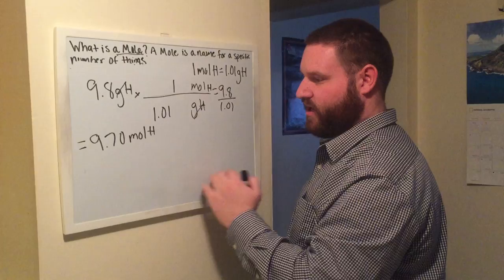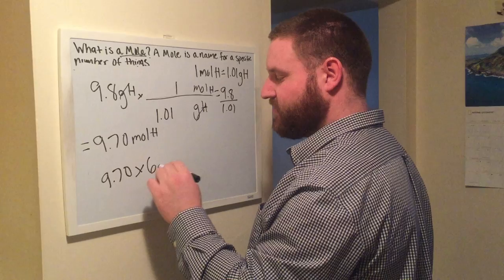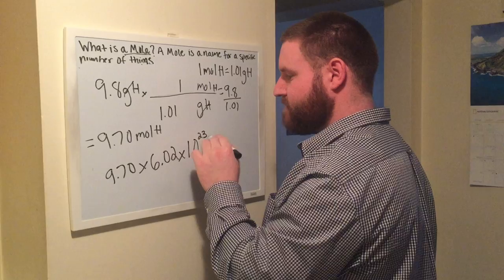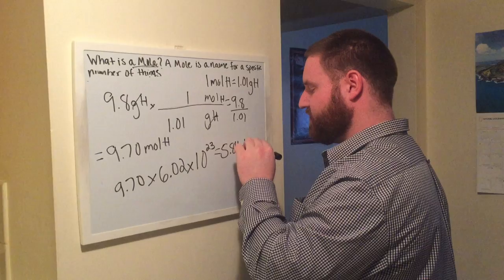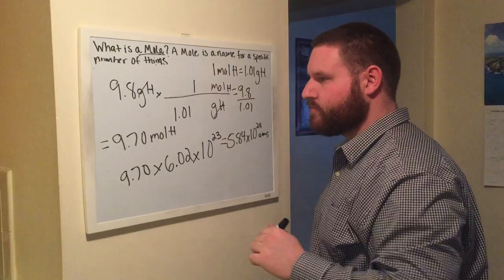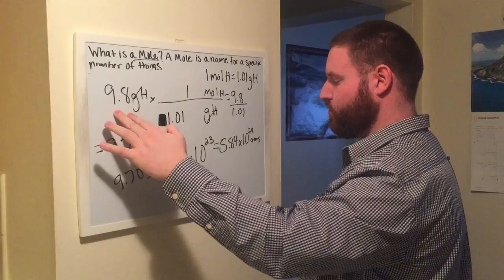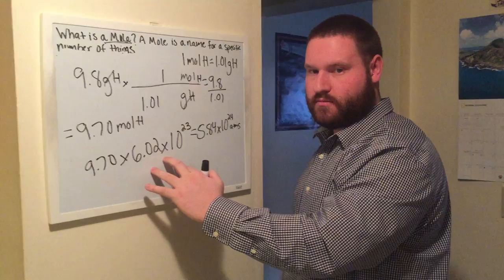Now in figuring particles and using Avogadro's number, we can further say or calculate 9.70 times 6.02 times 10 to the 23rd is equal to 5.84 times 10 to the 24th particles or atoms. Now, from this number, 9.8 grams of hydrogen, we finish off with 5.84 times 10 to the 24th atoms by using Avogadro's number.